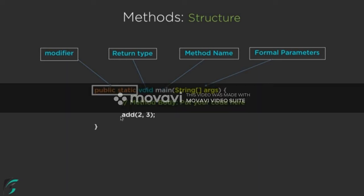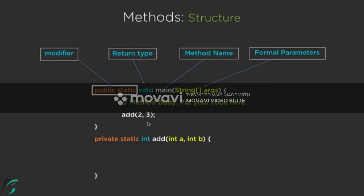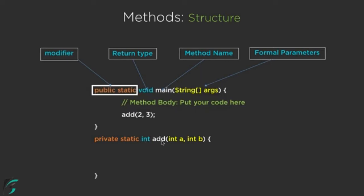From inside the main method we can also call a separate method. For example, let us call an add method to add two numbers 2 and 3. This method can be defined like: private static int add(int a, int b). The private static part is again the modifier, and int is the return type — unlike main which has void.